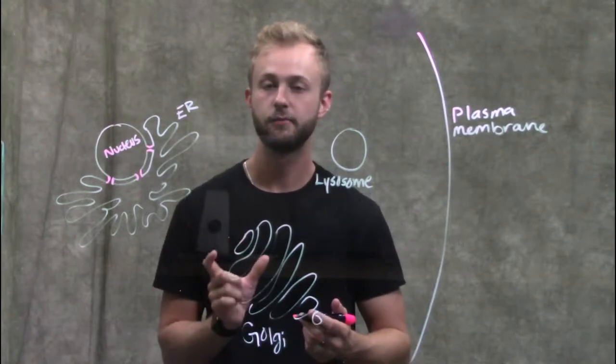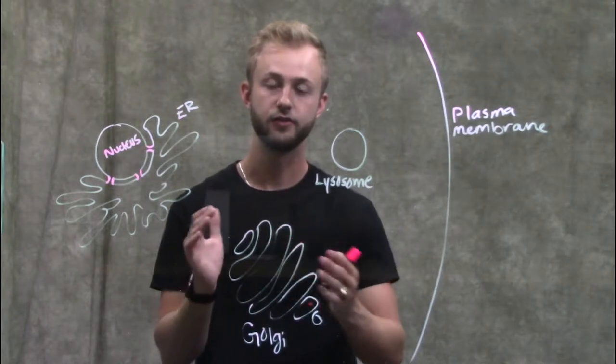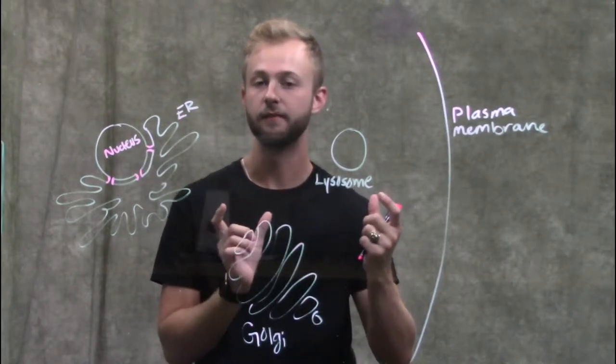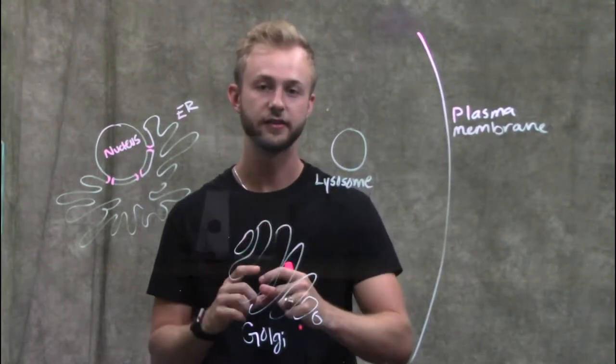However, there is some polarity with these membranes, especially with the Golgi body, which is going to have two distinct faces. That way the cell is able to figure out where to send these vesicles exactly.